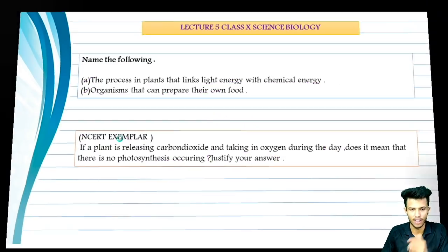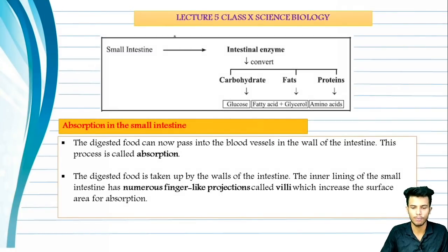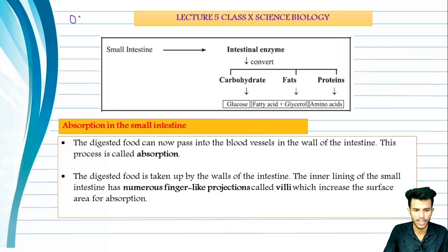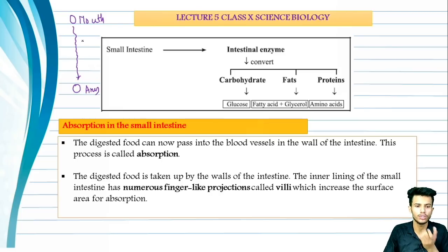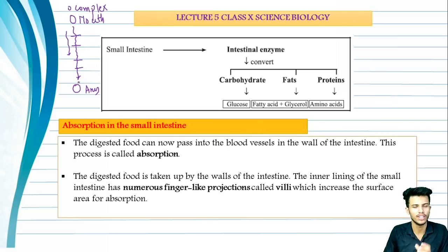Let's go to what we covered in the last class. In the last class, we saw the digestive system. It starts from the mouth. Complex food enters from the mouth and passes through a lot of compartments, where it is slowly broken down. The process of breaking it down is called digestion, and the system that performs this is called the digestive system.